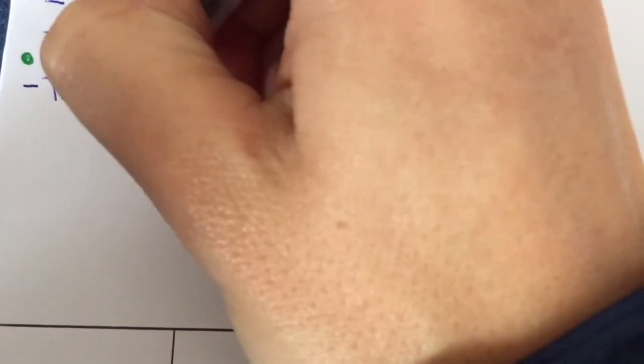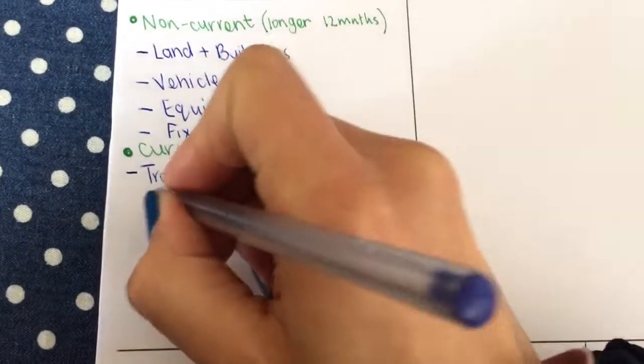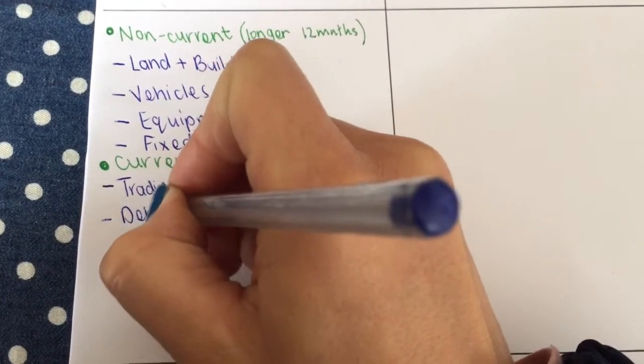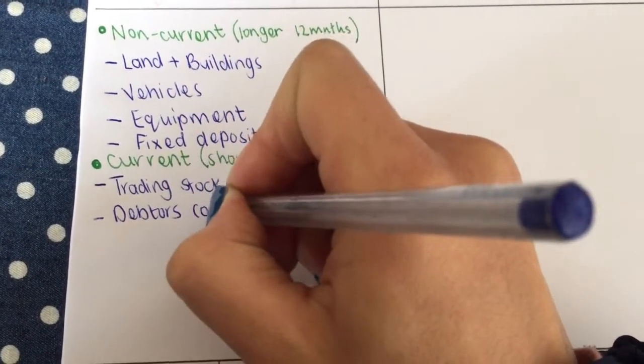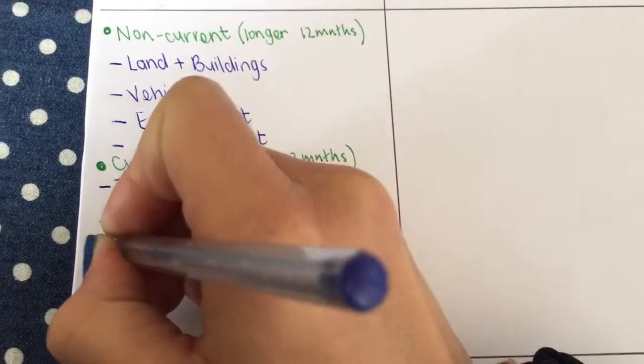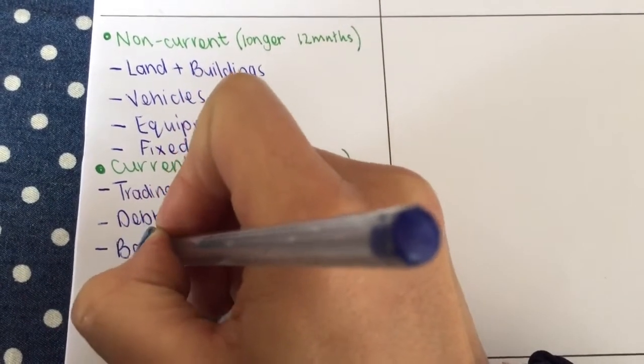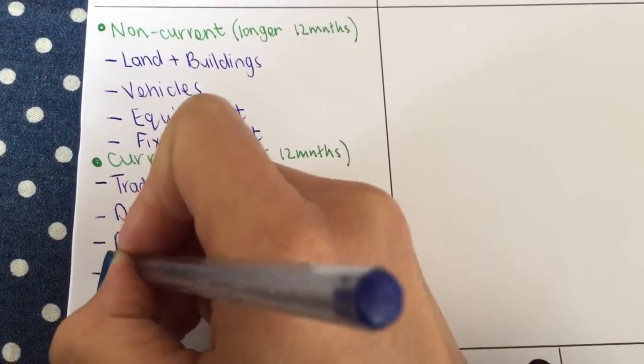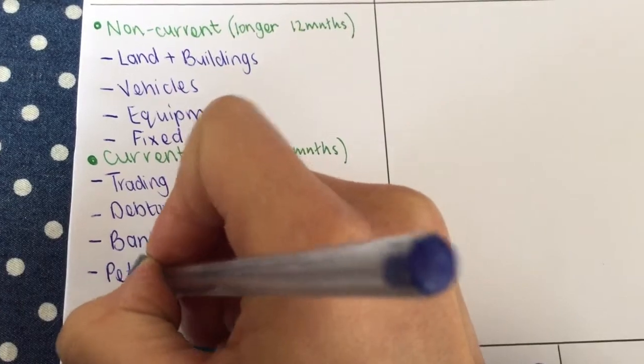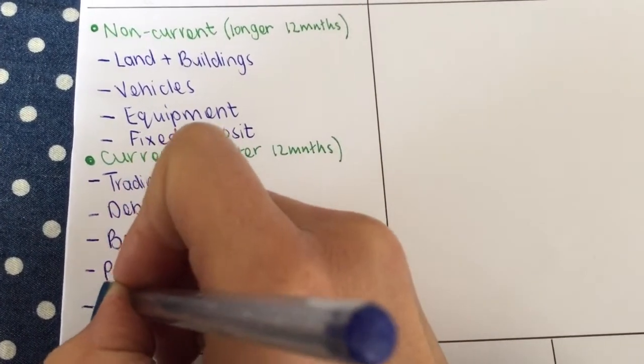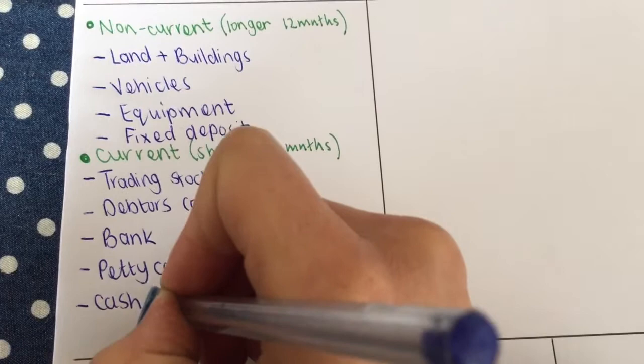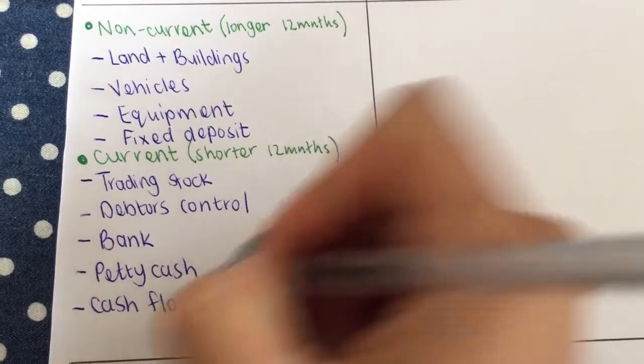My current assets I have a little list that's a bit longer. We start with trading stock, then we've got debtors control, bank, petty cash, and cash float.